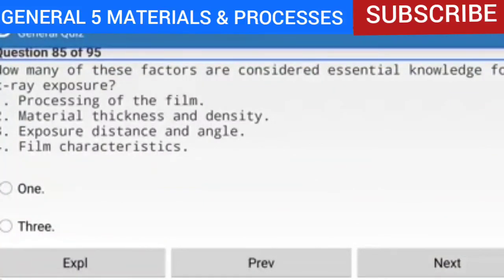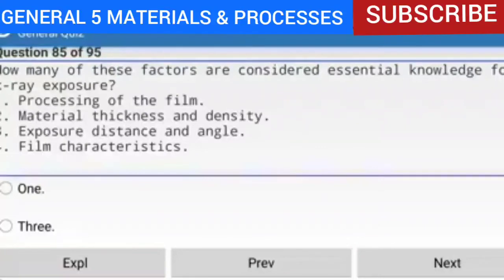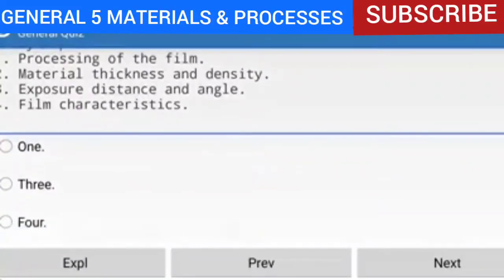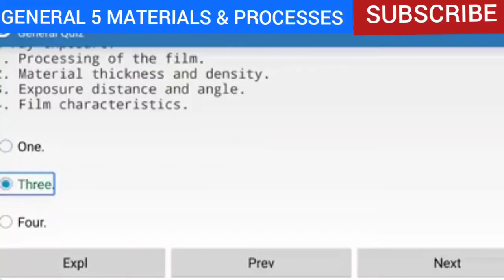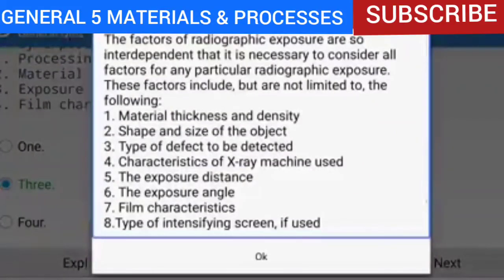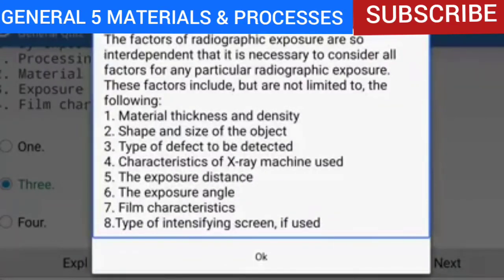Question 85 of 95: How many of these factors are considered essential knowledge for x-ray exposure? All 4 listed — and more. The factors of radiographic exposure include: 1. Material thickness and density. 2. Shape and size of the object. 3. Type of defect to be detected. 4. Characteristics of x-ray machine used. 5. The exposure distance. 6. The exposure angle. 7. Film characteristics. 8. Type of intensifying screen, if used. All factors are so interdependent that all must be considered. Reference: AMTG Chapter 7.